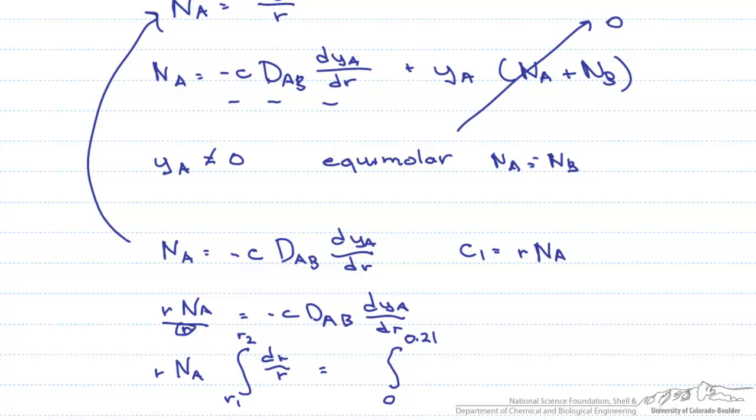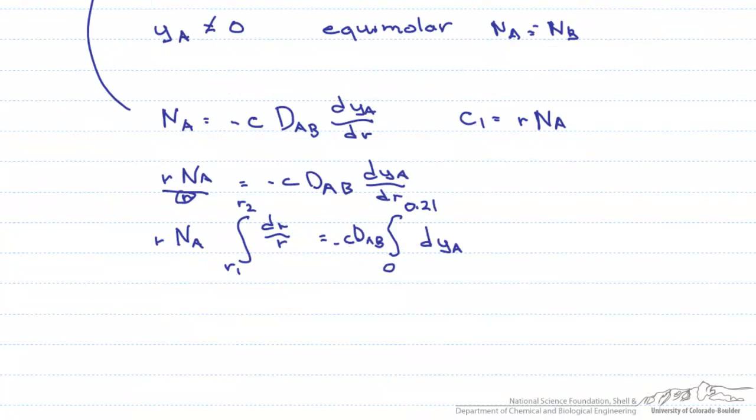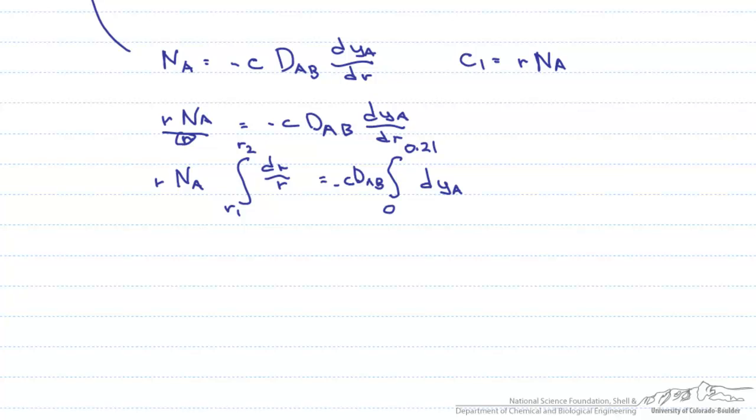This equals the integral from 0, which is Y sub A at R1, to 0.21, which is the Y sub A in the bulk, preceded by minus C D sub A B D Y sub A.